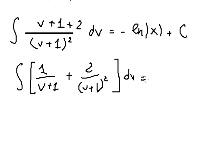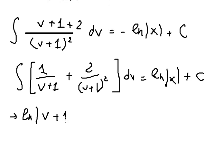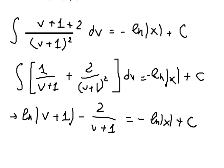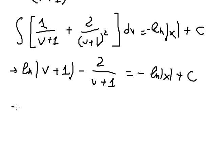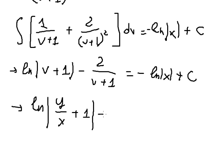So on the left we get the final integrated answer. Don't forget the negative sign. We have ln of v plus 1 minus 2 over v plus 1 equals negative ln of s plus C. Recall that v is equal to y divided by x, so we substitute back.